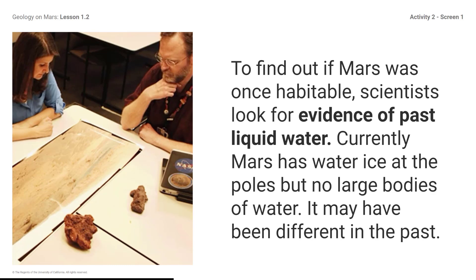To find out if Mars was once habitable, scientists look for evidence of past liquid water. Currently, Mars has water ice at the poles but no large bodies of water. It may have been different in the past. The search for signs of past liquid water is important for understanding whether Mars was ever habitable.